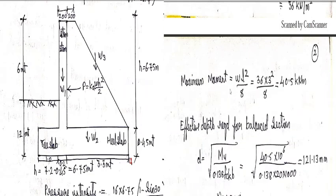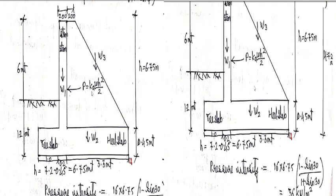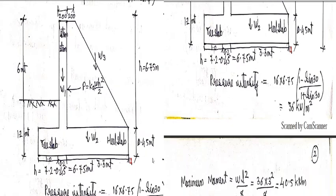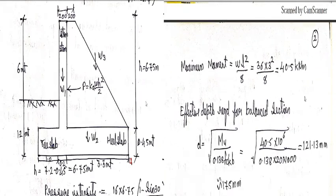So the maximum moment will be WH square by 2 considering as usual. So K into WH square divided by 2. Here you can see the pressure intensity, which is 16 into 6.75 into 1 minus sin phi plus sin phi. So 36 kN per meter square. So 36 into L which is 3 square divided by 8, 40.5 kN per meter.